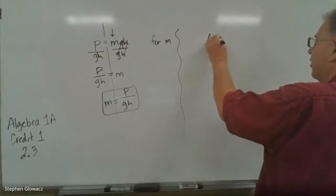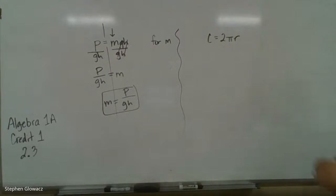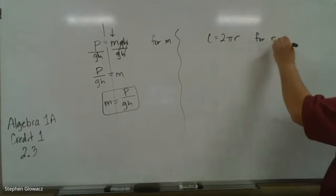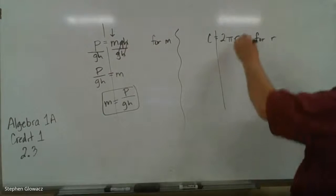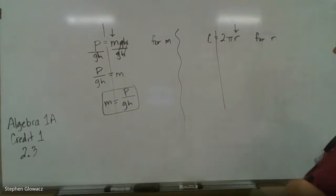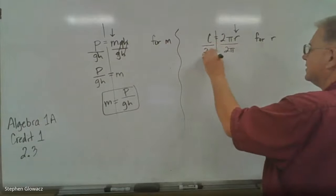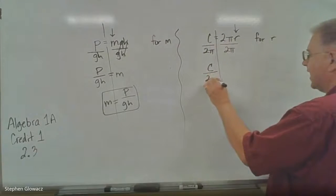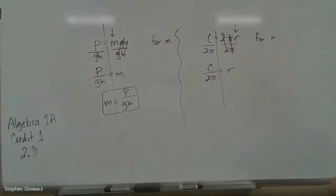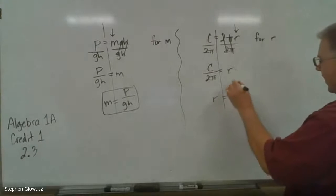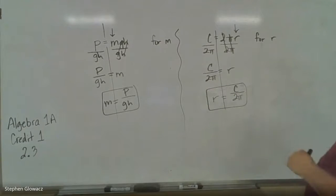Number two, also at the bottom of page 42, is the formula for circumference of a circle. You don't have to know that, but it makes it a little more relevant if you recognize some of these formulas. They're asking us to solve for R. R is being multiplied by 2 and pi, so we're going to divide by 2π on both sides. We get C over 2π — the 2's cancel, the pi's cancel — equals R. So R equals C over 2π.